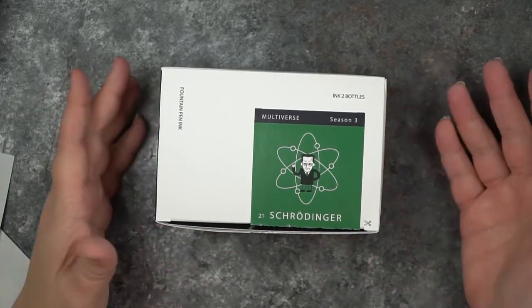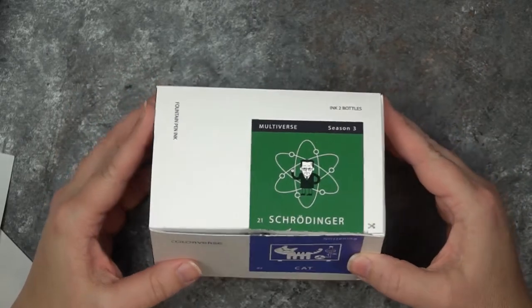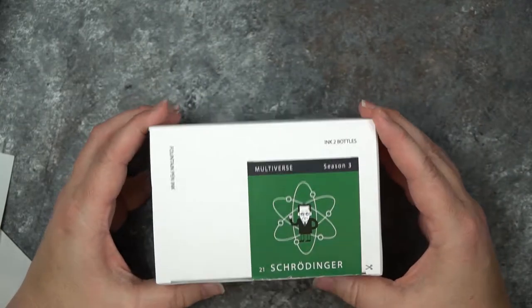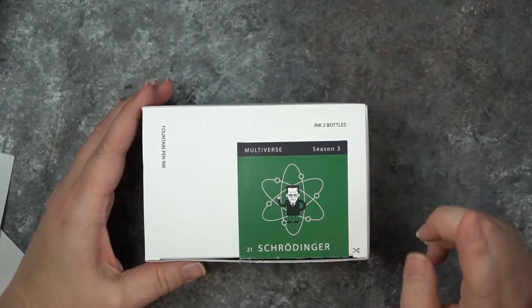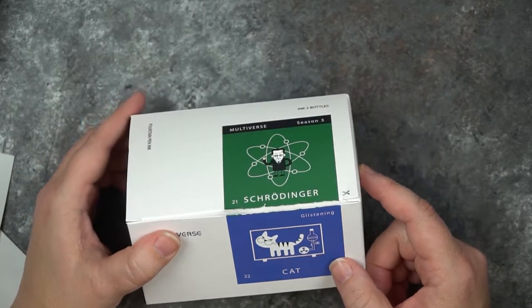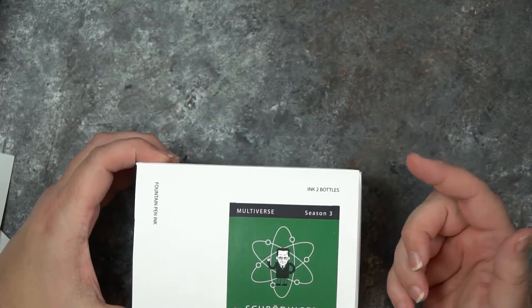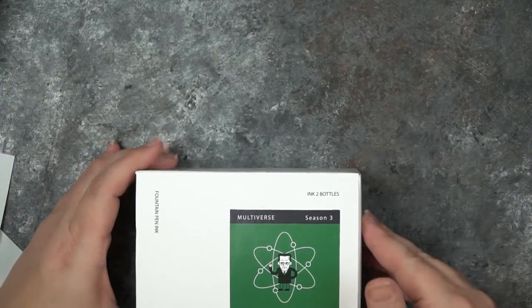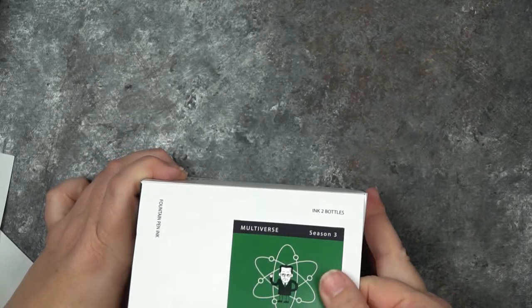They are from Korea. They come in boxes with two different colors, or some of them do. This one has Schrodinger and Cat, so Schrodinger's Cat. They come in two bottles. I'm not sure what season it is, but pretty cool.